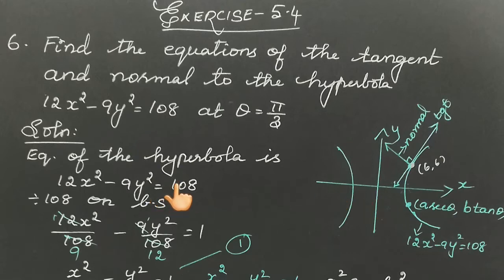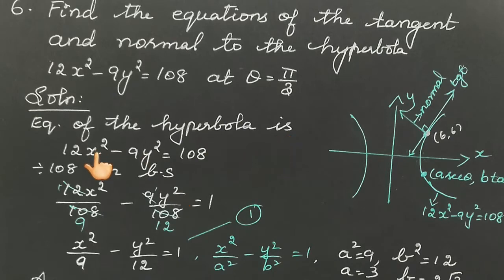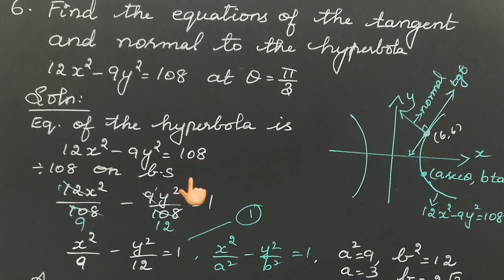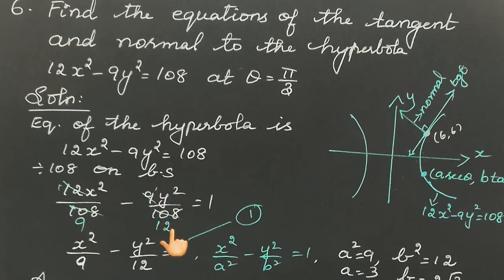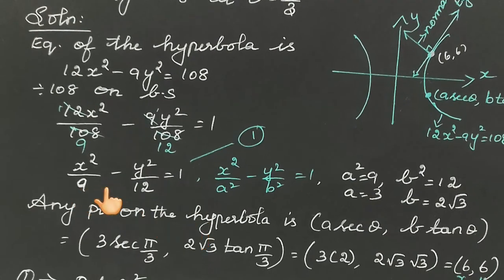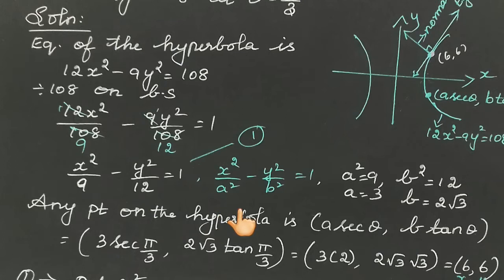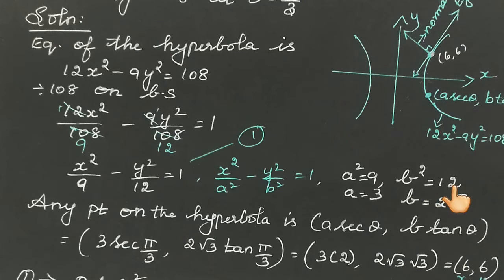The equation of the hyperbola is 12x² minus 9y² equals 108. To convert to standard form x²/a² minus y²/b² equals 1, divide both sides by 108: 12x²/108 minus 9y²/108 equals 1, which gives x²/9 minus y²/12 equals 1. Comparing, a² equals 9 so a equals 3, and b² equals 12 so b equals 2√3.